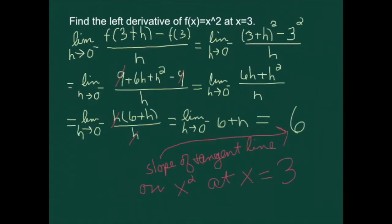Do you think we would have gotten a different answer if we had done the right derivative? Let's try it. The function is still x squared. The algebra stays the same, except now I'm using positive h's instead of negative h's. Each step along the way doesn't really change, and the final answer is still 6. This happens because x squared is a nice smooth function — the left derivative and the right derivative are both 6.